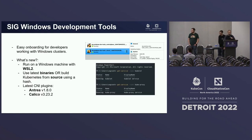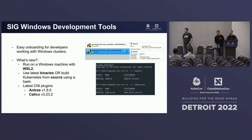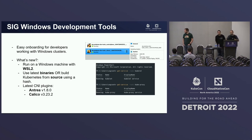In the next subproject, we have the SIG Windows development tools, which has been evolving. Luther implemented WSL2 support, so now you can run the project inside Windows machines. You can use the latest binaries to run your entire cluster locally, or compile with a specific hash. We are also always migrating to the latest CNI plugins like Antrea and Calico. It's only a YAML change to bootstrap a cluster locally from zero with the latest software.